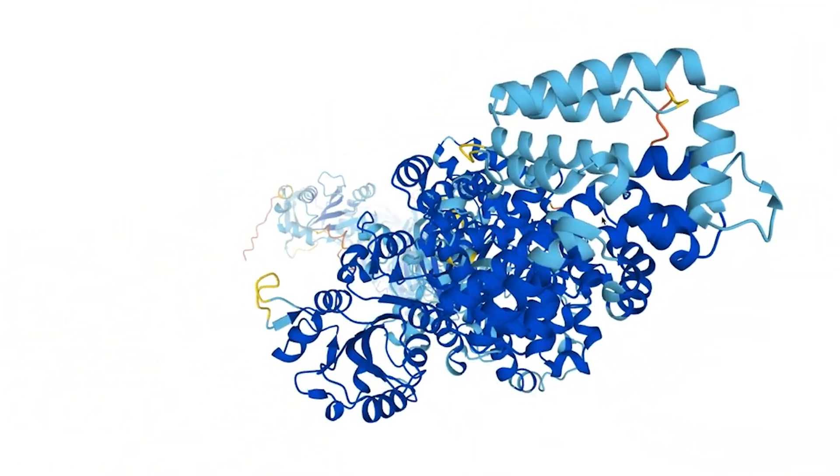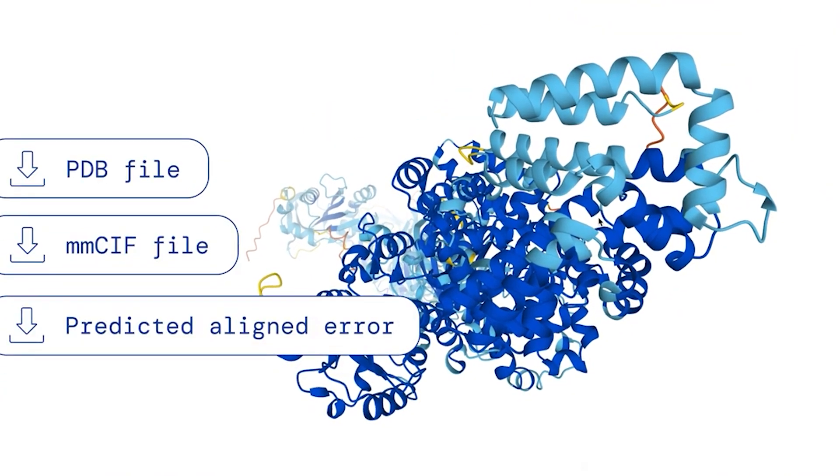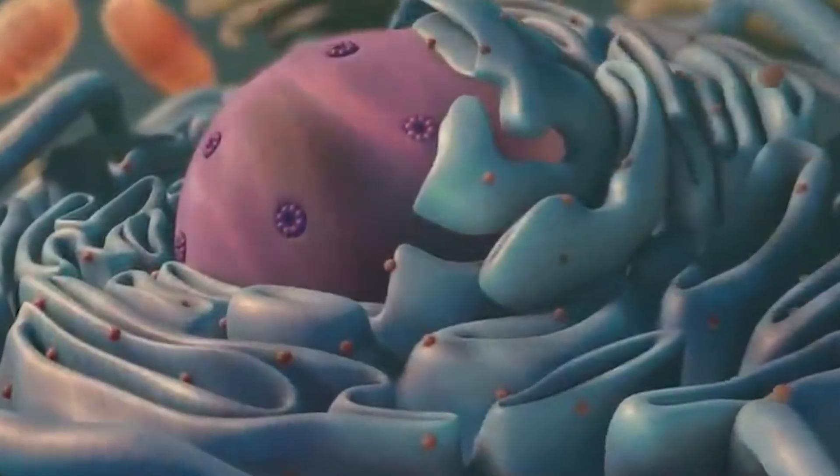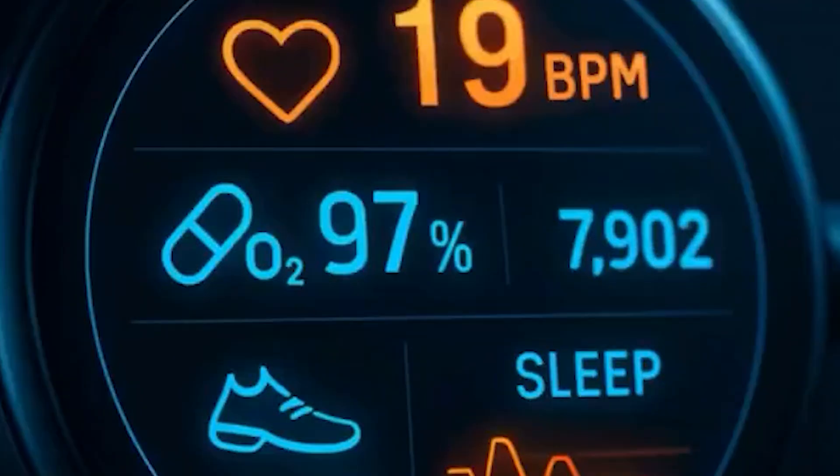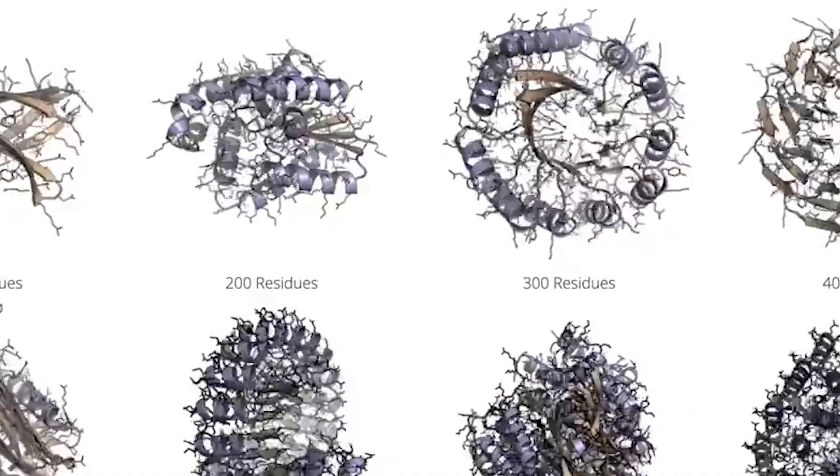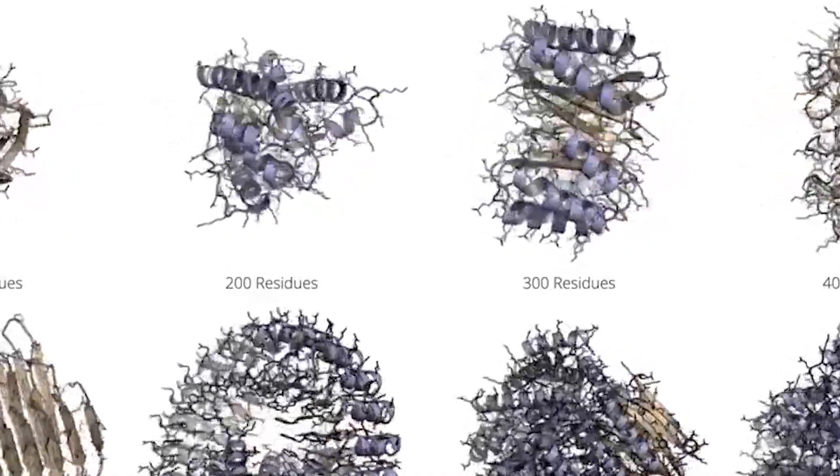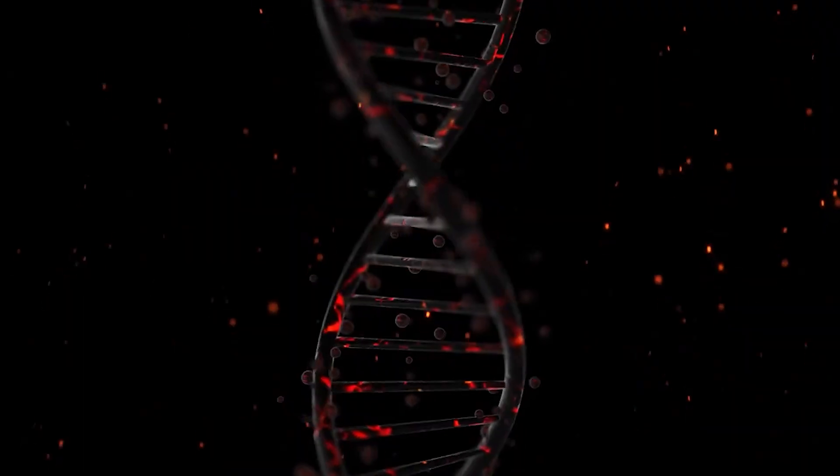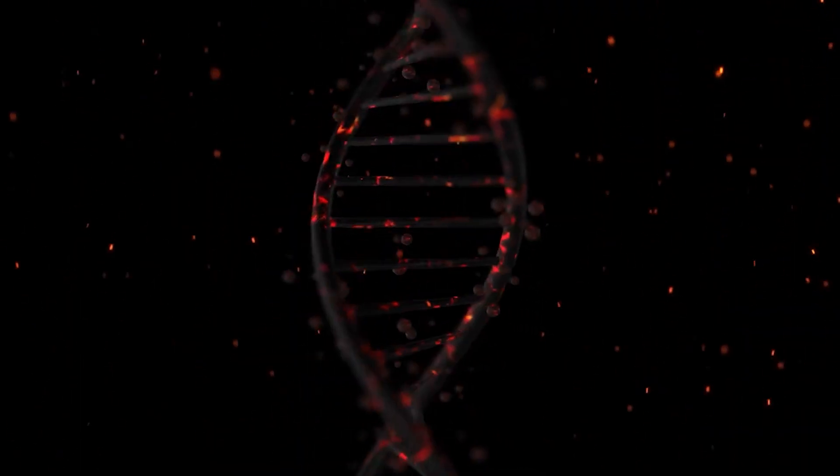For decades, one of the hardest problems in biology was figuring out how proteins fold. A protein starts as a long chain of amino acids, and the way it twists into a three-dimensional shape determines what it does in the body. Getting that shape experimentally could take months to years, even with advanced lab equipment. Biologists often call this a holy grail problem, because knowing a protein structure lets you understand what it does, how it fails, and how to target it in disease. But predicting that shape from sequence alone was something researchers struggled with for nearly half a century.